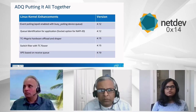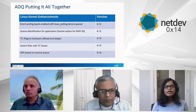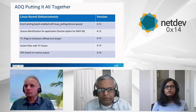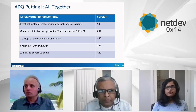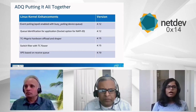In the next slide, we'll see various Linux kernel versions where each of the ADQ ingredients got upstreamed. With 4.19, we complete upstreaming the various ADQ ingredients. Now I'll hand over back to Kiran for the rest of the session.